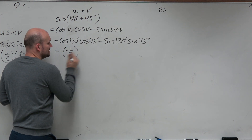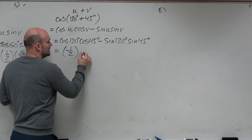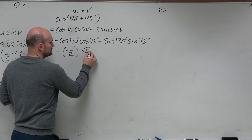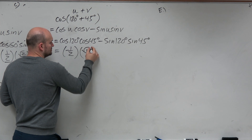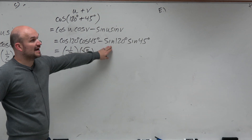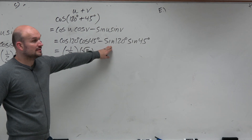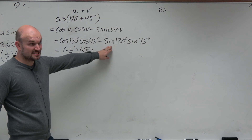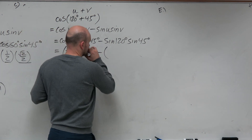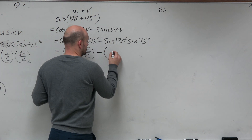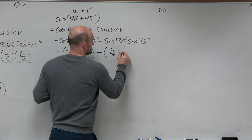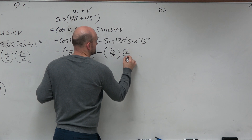Cosine of 45 degrees — that's in the first quadrant, so that's square root of 2 over 2. Never mind, this is exactly what I wanted. Sine of 120 — that's in the second quadrant, so that's still positive. So it's minus square root of 3 over 2 times square root of 2 over 2.